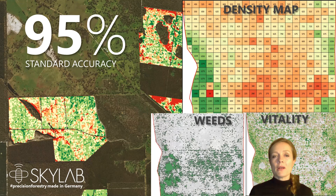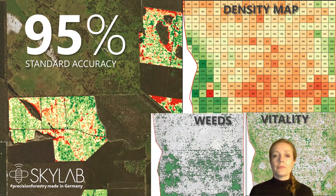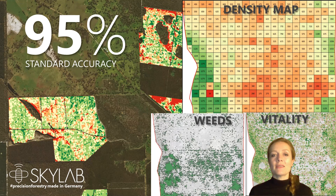You might be asking yourselves: how accurate is all of this? About a year ago we realised we needed to get better at being really accurate — so we did. We trained our algorithm with more than 50 million seedlings and trees, and now we can typically detect at least 95% of seedlings visible in the aerial data.